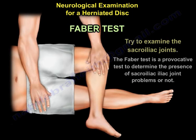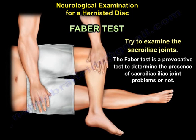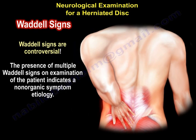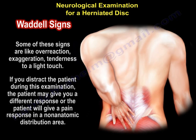Try to examine the sacroiliac joints. The FABER test is a provocative test to determine the presence of a sacroiliac joint problem. Waddell signs are controversial, and the presence of multiple Waddell signs on examination indicates a non-organic symptom etiology. Some of these signs include overreaction, exaggeration, or tenderness to light touch. If you distract the patient, they will give a different response, or the patient will give a pain response in a non-anatomic distribution.